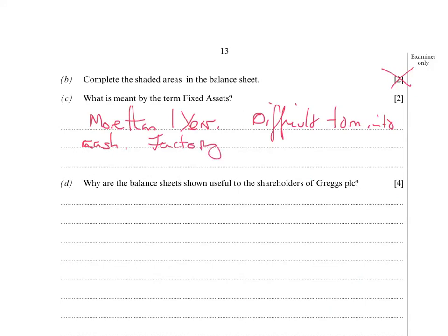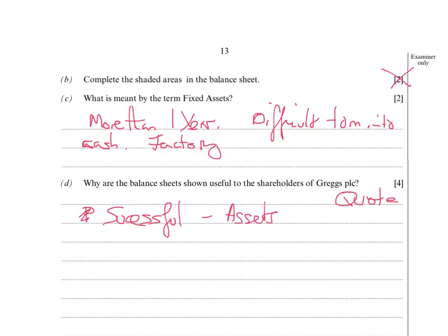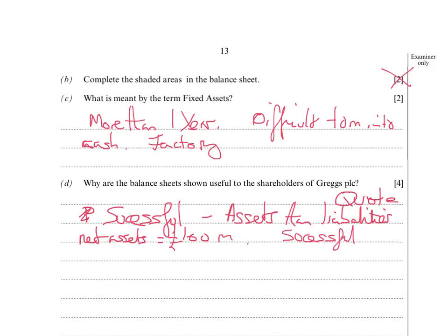The next question is: why are balance sheets useful to the shareholders of Greg PLC? A lot of people don't do very well at this. I'd try to quote from the balance sheet as well. The first thing is they're important because you can see whether a company is successful or not. A successful company is more likely to have more assets than liabilities. So you can say they've got more assets than liabilities, meaning they're going to be successful - which means shareholders will be happy because they'll get dividends.